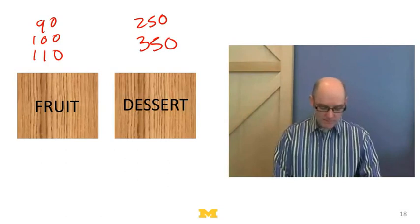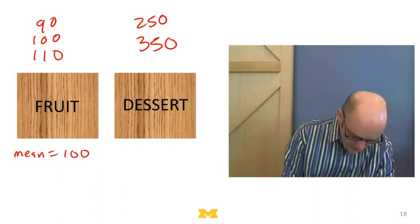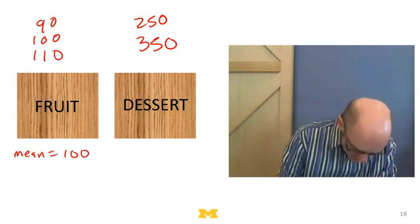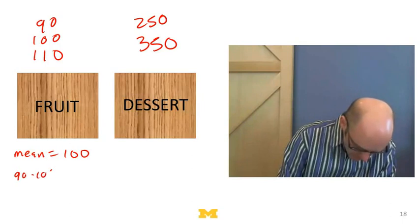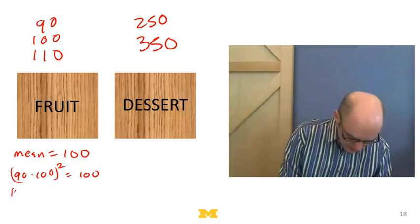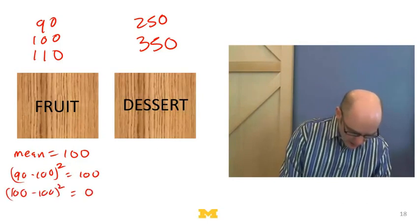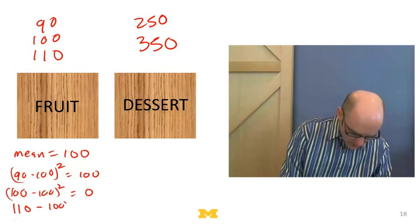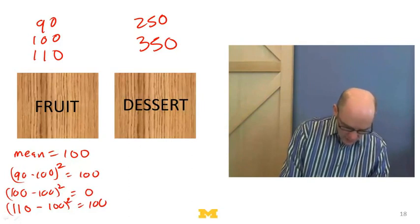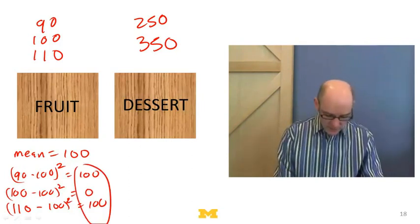So let's look at them in more detail. I've got 90, 100, 110. The mean is going to be 100 here. The average of those three is 100. What's the total variation? Well, 90 minus 100 is just 10. So if I square that, I get 100. 100 minus 100 is zero. So if I square that, I get zero. And 110 minus 100 is also 10. So if I square that, I get 100. So the total variation here is just going to be 100 plus 100, which is 200. So now I've got a mean of 100 and a total variation of 200.